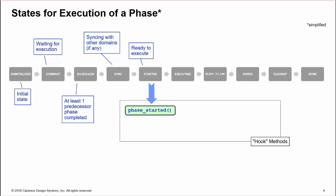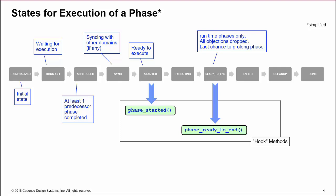The state will automatically execute the phase_started hook method. We execute the state in executing. The next state is ready_to_end. This state is only applicable to phases with objections, i.e. run phases and sub-phases. It is entered when all objections for the phase have been dropped and is the last chance to prolong the phase. It has a hook method, phase_ready_to_end.